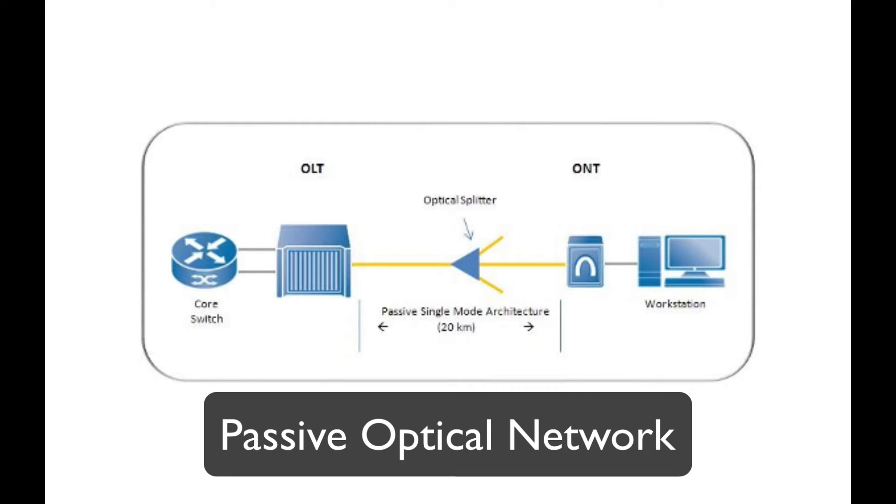A passive optical network is a fiber optic point-to-multipoint network. A single optical fiber serves multiple endpoints by using unpowered or passive optic splitters to divide the bandwidth among multiple endpoints known as access points.